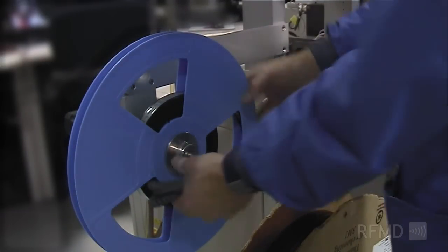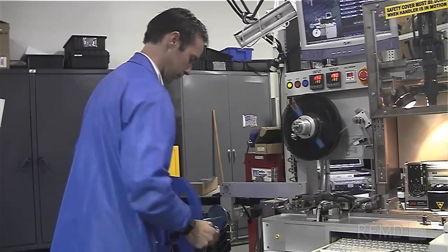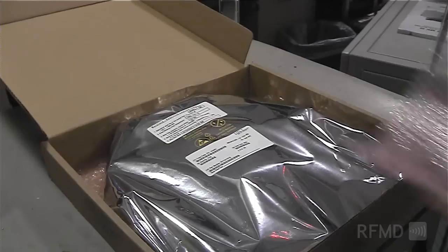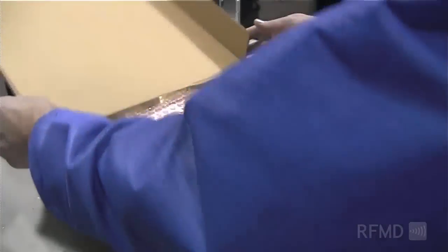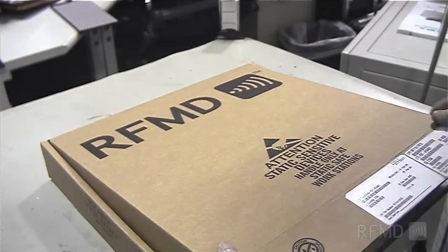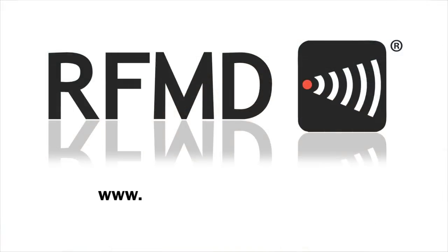The process reaches its final phase when the reels, trays, or tubes are placed in anti-static bags or boxes to be shipped using our vast distribution channels to customers throughout the world. Visit RFMD.com/highpowerGAN to see a complete listing of RFMD's high power GAN products.